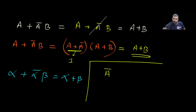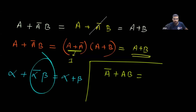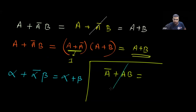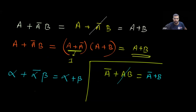For example, if you have Ā + A·B, what can you write? Remember: if you have α + ᾱ·β, you can remove the complemented factor. So here, Ā + A·B — you can remove this A, and finally it will be Ā + B.